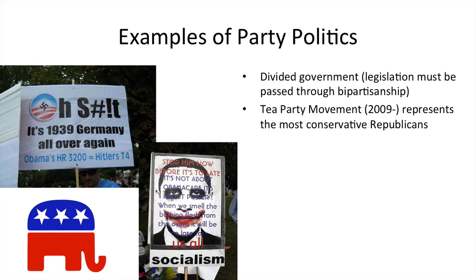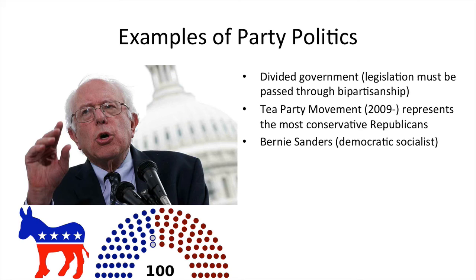The Tea Party movement, which came about after Obama won his first election, represents the most conservative — and most anti-Obama — Republicans at that time. Bernie Sanders is a completely different figure: basically the most successful independent in American political history, who has called himself a democratic socialist — a dirty word in America for quite some time — but he has been a congressman and senator, and tried to run for president in 2016. It looks like Hillary Clinton will beat him in the Democratic primary and then face the Republican candidate.